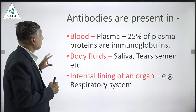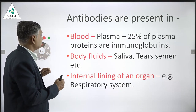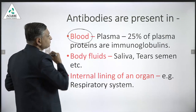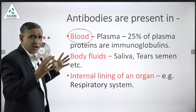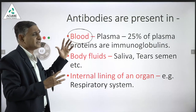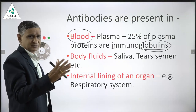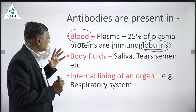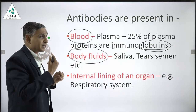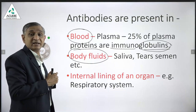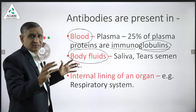Antibodies are present in three important regions. First is the blood, where plasma cells are present and large amounts of immunoglobulins circulate. Second, all body fluids — for example, saliva, tears, semen, and all mucus secretions contain antibodies.